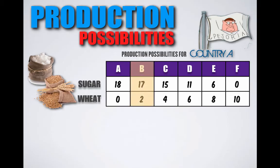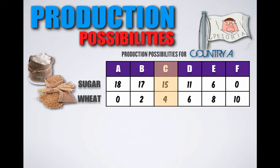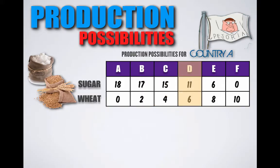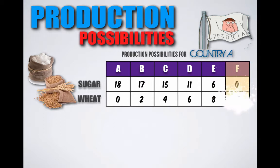At point B, they can produce 17 units of sugar and 2 units of wheat. At point C, they can produce 15 units of sugar and 4 units of wheat. At point D, they can produce 11 units of sugar and 6 units of wheat. At point E, they produce 6 units of sugar and 8 units of wheat. And at point F, they produce no units of sugar and 10 units of wheat. In this case, all resources are shifted towards the production of wheat.